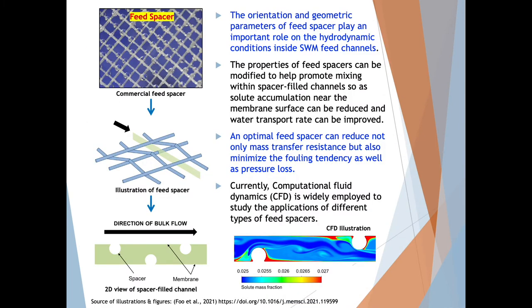The orientation and geometric parameters of feed spacer play an important role on the hydrodynamic conditions inside spiral wound membrane feed channels. The properties of feed spacers can be modified to help promote mixing within spacer-filled channels, so solid accumulation near the membrane surface can be reduced and water transport rate can be improved. An optimal feed spacer can reduce not only mass transfer resistance, but also minimize the fouling tendency as well as pressure loss.